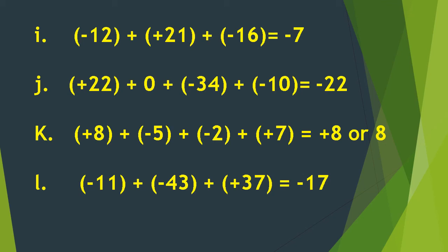Letter L: negative 11 plus negative 43 plus positive 37 is equal to negative 17. We first combine negative 11 and negative 43 to get negative 54. Then negative 54 plus positive 37 gives the answer negative 17.